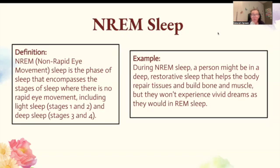NREM sleep. Non-rapid eye movement sleep is the phase of sleep encompassing stages where there is no rapid eye movement, including light sleep in stages one and two, and deep sleep in stages three and four. During NREM sleep, a person might be in a deep restorative sleep that helps the body repair tissues, build bone and muscle, but they won't experience vivid dreams as they would in REM sleep.